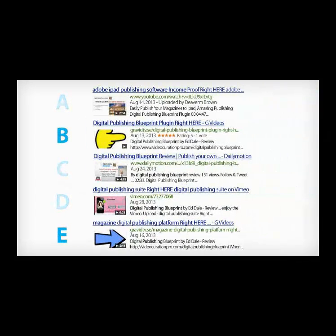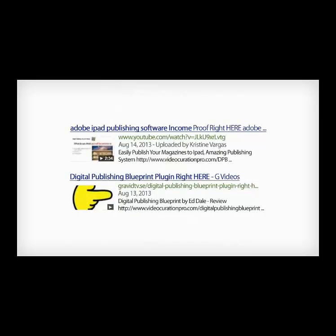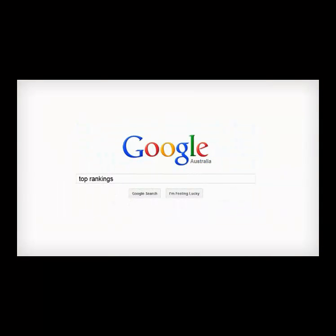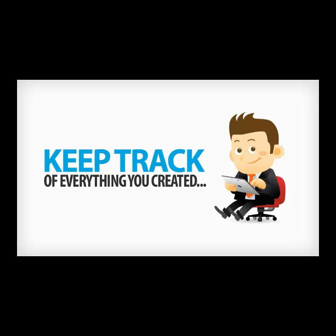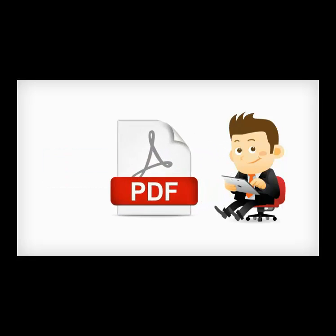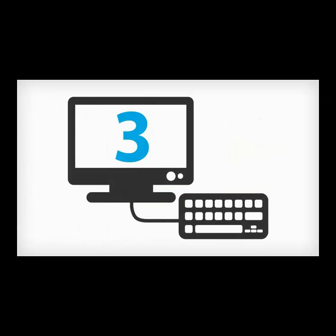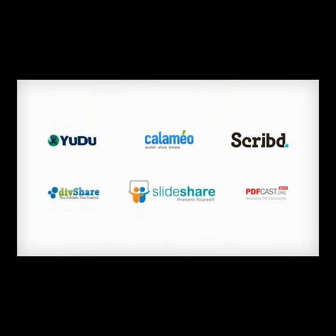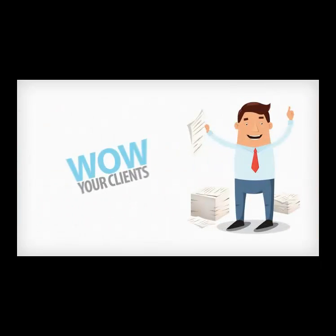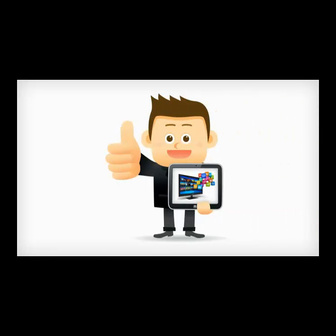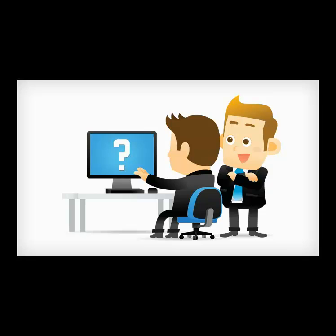Sites B and E are on the Video Curation Network — notice how B is ranking higher than the Dailymotion video site. Many of the members using the Video Curation Networks have pointed out that links dropped in their descriptions have quickly rocketed the rankings of sites they point to. That means the videos and sites end up getting top rankings in Google and other search engines. And you can keep track of everything that's been created because every project you run through Video Curation Pro produces a detailed PDF report. You'll get three different versions of your links to give you a variety of anchor text links, so you can catapult your rankings even higher by uploading the reports to your favorite document sharing sites.